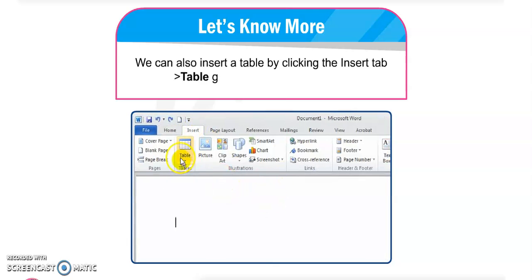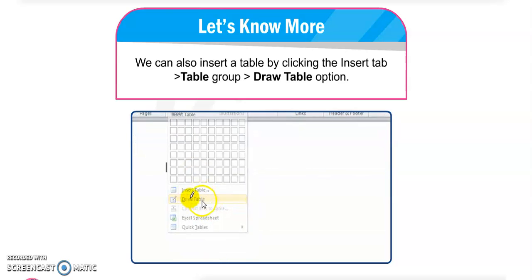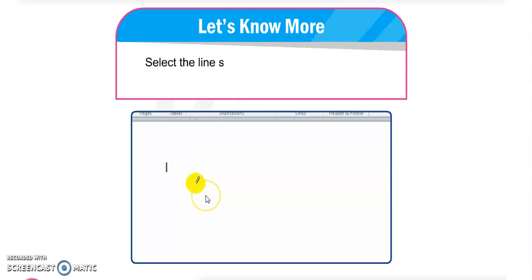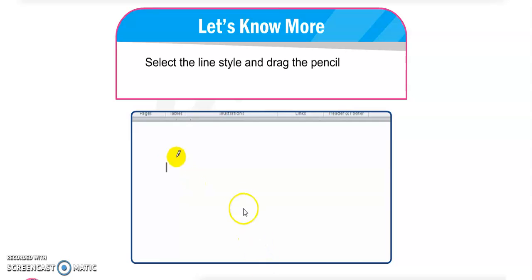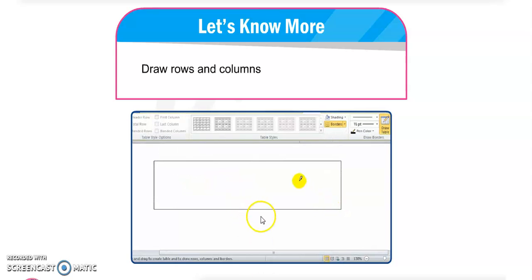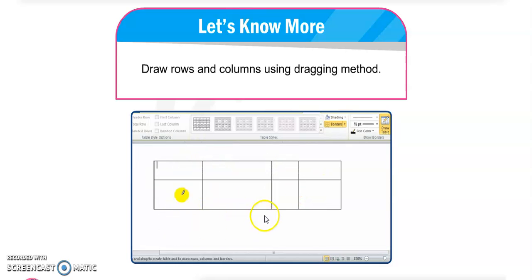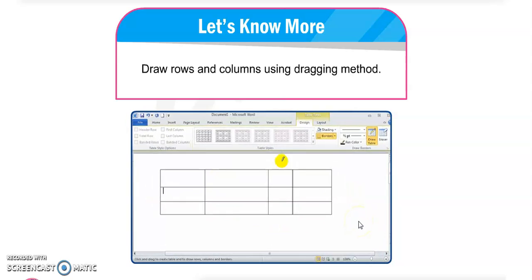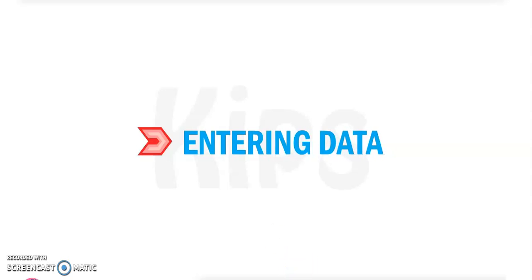We can also insert a table by clicking on the Insert tab, Table group, and selecting Draw Table. When you click on Draw Table, the pointer will change to a pencil shape. Just like drawing on paper, we can draw a table on the Word screen with this pencil by dragging to create rows and columns.